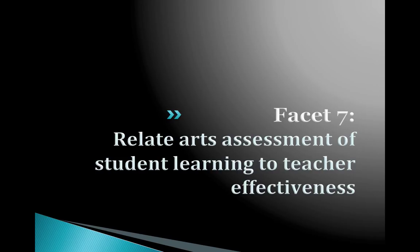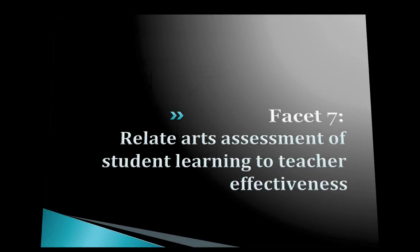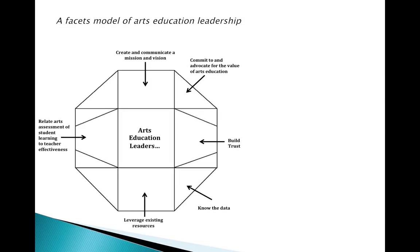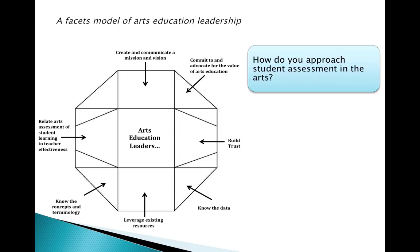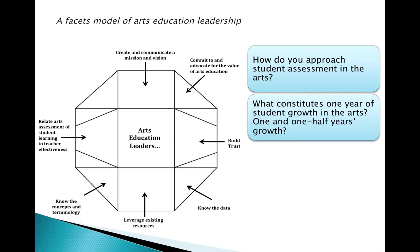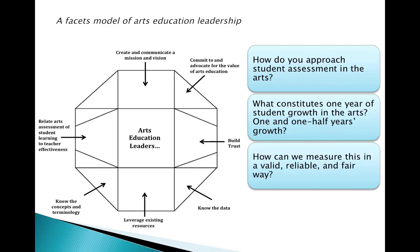Facet seven: relating arts assessment of student learning to teacher effectiveness. How do you approach student assessment in the arts? Are you assessing students in terms of what they're learning in the arts? How do you capture that and share that with others? What do you see as constituting one year of student growth in the arts, or one and one-half years of growth? And how do you measure this in a way that is considered valid, reliable, and fair?